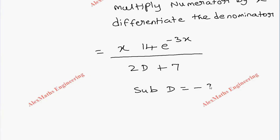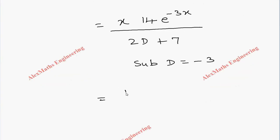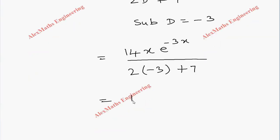The denominator is 2(-3) + 7, which is -6 + 7 = 1. Finally, we get 14xe^(-3x) divided by 1.